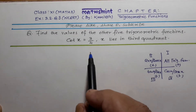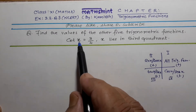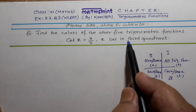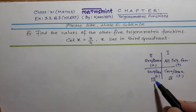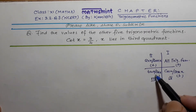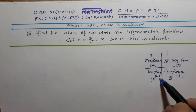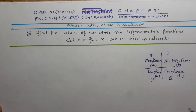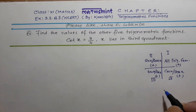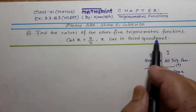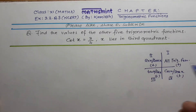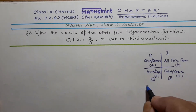So in the question, cot x = 3/4 and x lies in the third quadrant. In the third quadrant, tan and cot are already positive — it is given. Apart from this, you should know three basic formulas for conversion of trigonometric functions into each other.